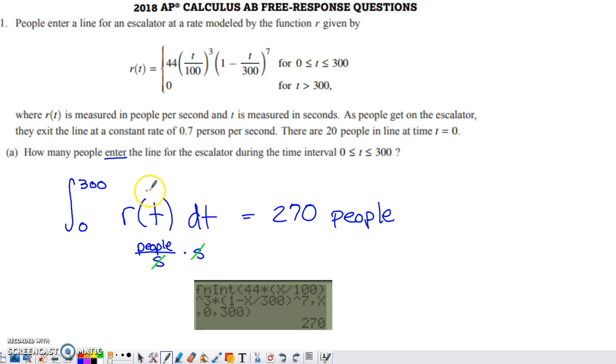We're going to integrate the rate at which people are entering the line from 0 to 300. If you think about the units here, R of T is measured in people per second. DT is measured in seconds. The seconds are going to cancel with each other and our answer is going to be units of people.